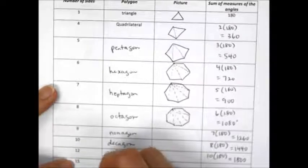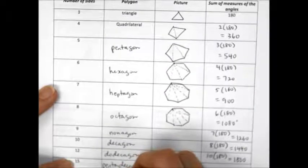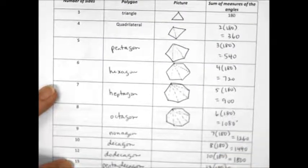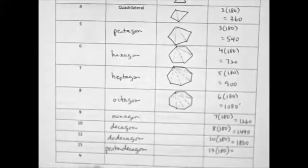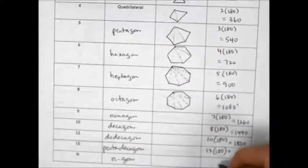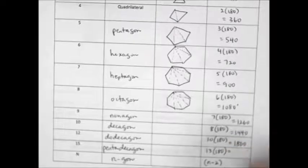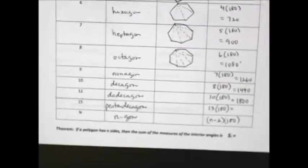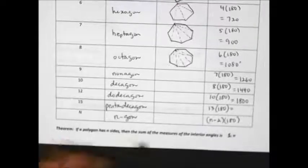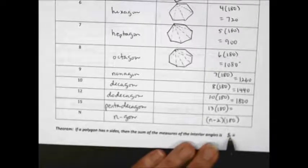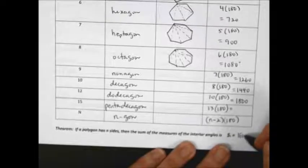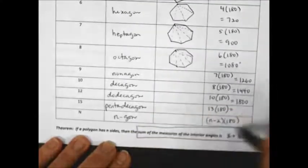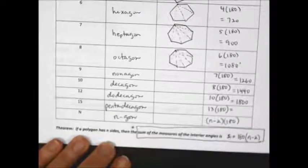A 15-sided figure is called a pentadecagon. If it has 15 sides, it'll have 13 triangles, so 13 times 180. More importantly, if we just have n sides — an n-gon — we would have n minus two triangles, multiplied by 180. That's the formula: if a polygon has n sides, then the sum of the measures of the interior angles is 180 times (n minus 2). This is your first formula, and you can see how we derived it by looking at the pattern.